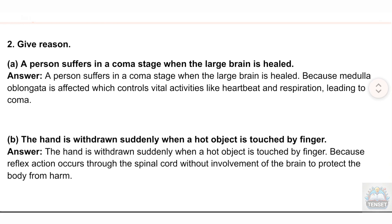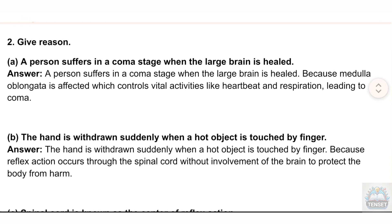Question 2, Give Reasons. (a) A person suffers in a coma stage when the large brain is injured. Answer: A person suffers in a coma stage when the large brain is injured because the medulla oblongata is affected, which controls vital activities like heartbeat and respiration, leading to coma.